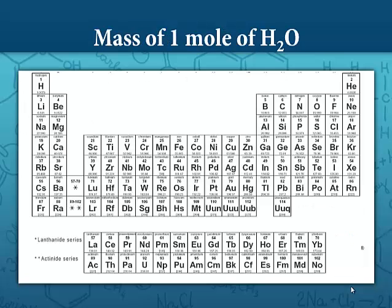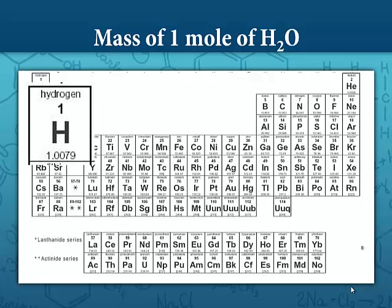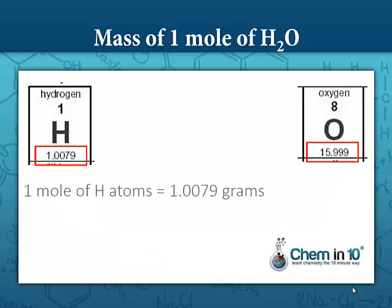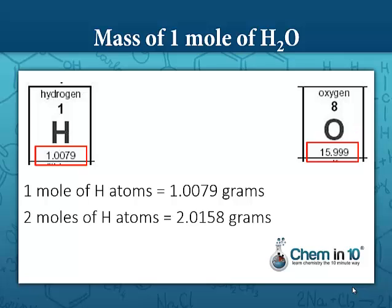Let's look at the mass of one mole of water. To find the mass, we look on the periodic table. The molar mass of hydrogen is 1.0079 grams per mole, and the molar mass of oxygen is 15.999 grams per mole. So the mass of one mole of hydrogen atoms is 1.0079 grams. Since water contains two moles of hydrogen atoms, it contains twice that amount, or 2.0158 grams.